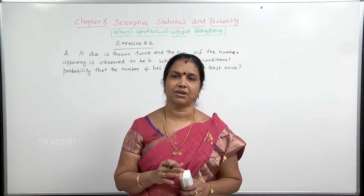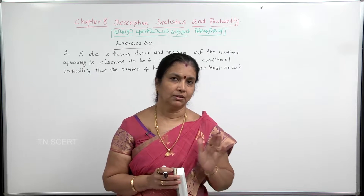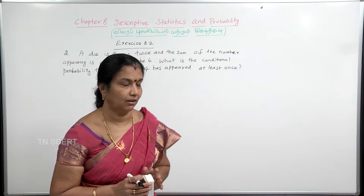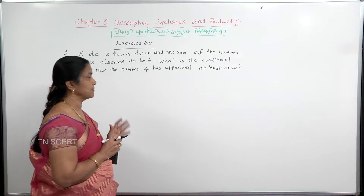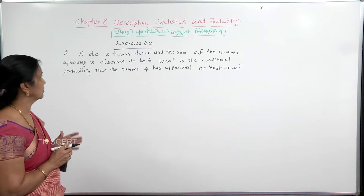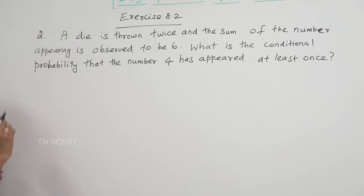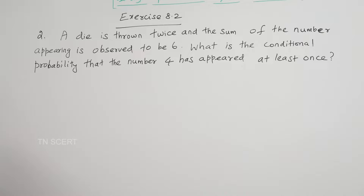Conditional probability. Let's take a sample space where a die is thrown twice and the sum of the numbers appearing is observed to be 6. What is the conditional probability that number 4 has appeared at least once?